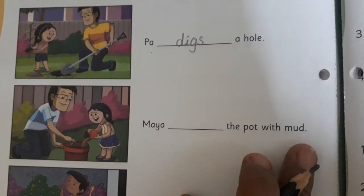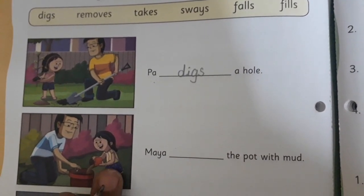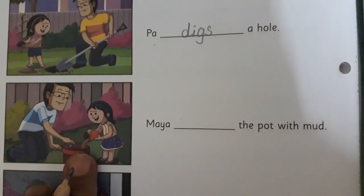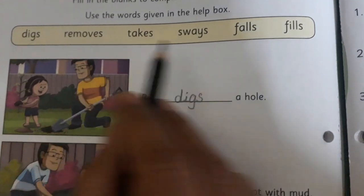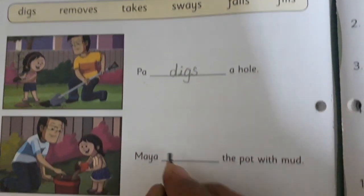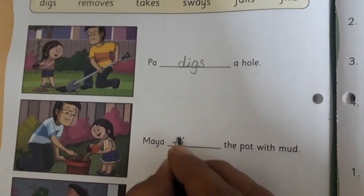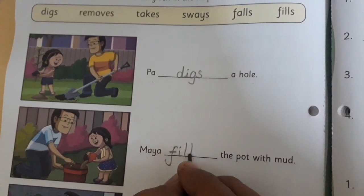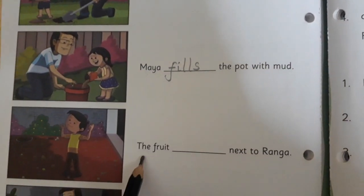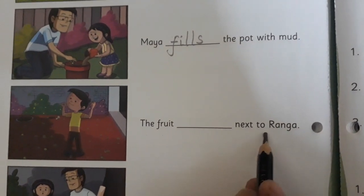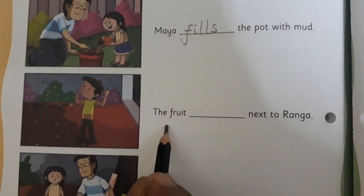Second sentence: 'Maya ___ the pot with murd.' What is Maya doing here? Maya is putting something in, right — filling something. So we are going to write 'fills' — F, I, L, L, S — fills. The fruits ___ next to ranga.